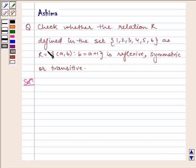Check whether the relation R defined in the set {1, 2, 3, 4, 5, 6} as R = {(a,b): b = a+1} is reflexive, symmetric or transitive.